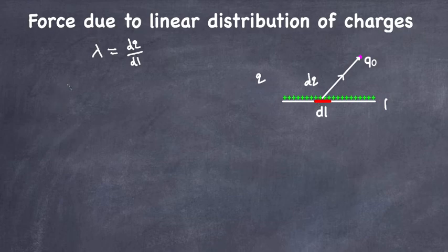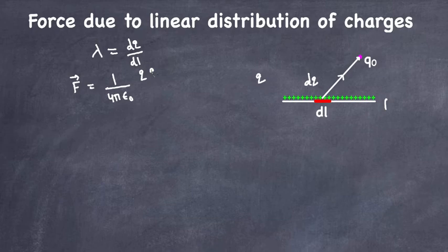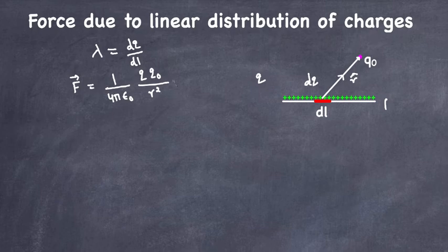First, let me write down the electrostatic force from Coulomb's law: F = (1/4πε₀) * Q * Q₀ / r², with the direction along the unit vector r̂. I'm just writing the general formula for electrostatic force from Coulomb's law.